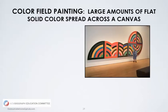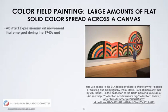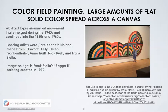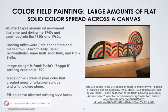Now let's talk about a modern art movement called color field painting, where large amounts of flat, solid color are spread across a canvas. Very often there is no mixing of pigments; rather paints are bought in the store and painted directly onto the canvas. It was an abstract expressionist movement that emerged in the 1940s and continued into the 1950s and 60s. Leading artists include Kenneth Noland, Gene Davis, Ellsworth Kelly, Helen Frankenthaler, Ann Truitt, Jack Bush, and Frank Stella. Here we show Frank Stella's Ragaport, created in 1970 — notice how he's distinctly painted colors so they don't overlap but create a harmonious relationship. Large canvases of pure color created areas of unbroken surface and flat picture plane. It's still an active painting style today.